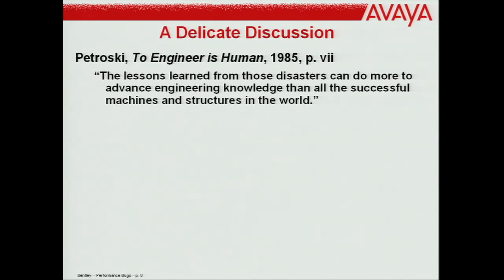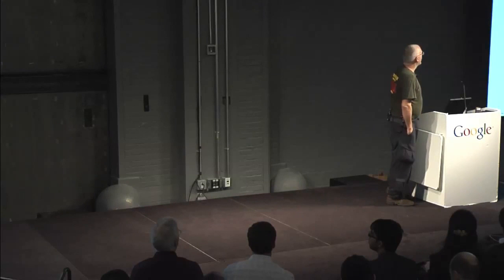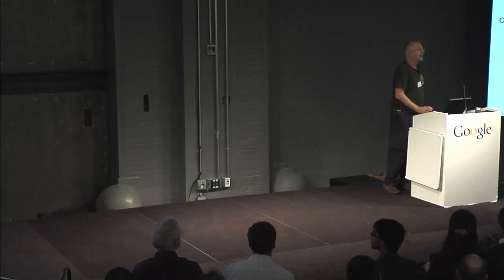Henry Petroski, in his wonderful book 'To Engineer Is Human,' talks about the role of failure in successful design. He says the lessons we learn from disasters can do more to advance engineering knowledge than all the successes. We as engineers have to talk not only about our successes — we have to talk about our failures. Real software has bugs. I have been paid to be a computer programmer for longer than the majority of you have been breathing.